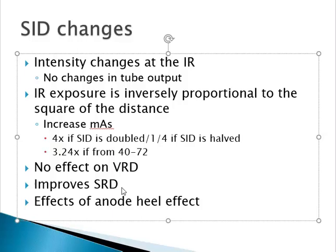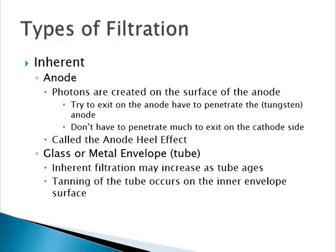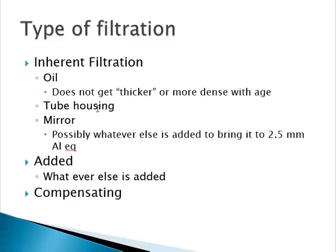Remember the anode heel effect — it gives worse penumbra at the cathode end of the x-ray tube. The density and intensity differences between the two ends of the image receptor are less significant at increased SIDs. Regarding inherent filtration: we have the anode, the glass envelope — with filtration increasing in the glass envelope when tanning occurs — oil, tube housing, and the mirror. Added filtration is anything beyond 2.5 mm of aluminum equivalent, and compensating filters are also added filtration.